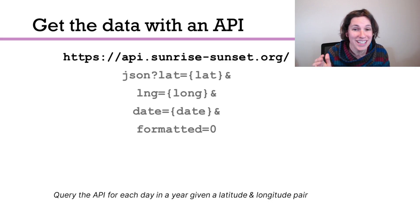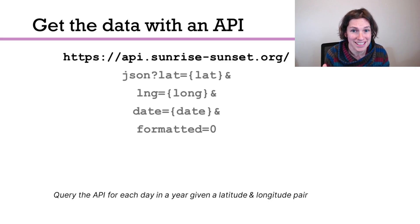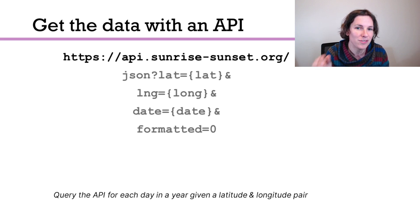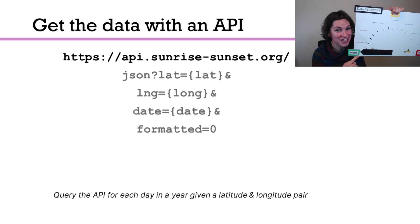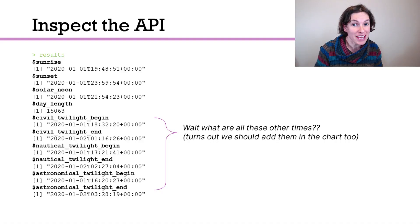So the first thing we need to do is get the data to make the chart. Turns out that's super easy. There's a sunrise-sunset API you can use, and that API will give you a nicely formatted JSON file that has the sunrise and sunsets in it. API data from JSON puts us in the pristine range, but it turns out there's more than just sunrise and sunset in this API.